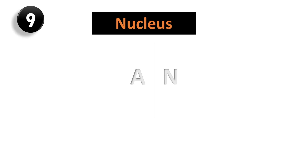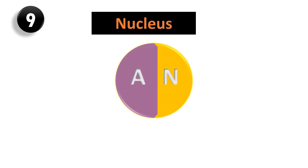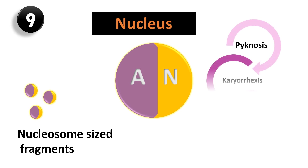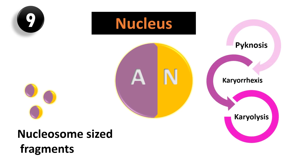Difference 9: The nucleus in apoptosis fragments into nucleosome-sized fragments. While in necrosis the nucleus undergoes pyknosis, karyorrhexis, and karyolysis.